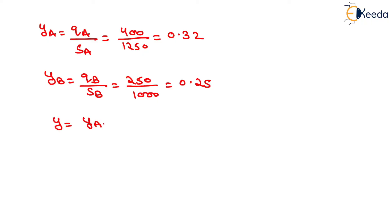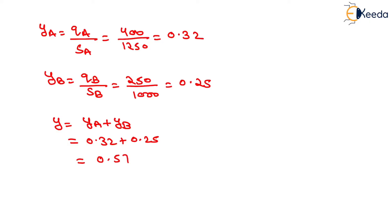Now we determine the value of Y, which equals YA plus YB. Putting YA as 0.32 and YB as 0.25, we get Y equal to 0.57.